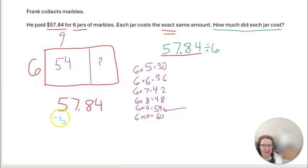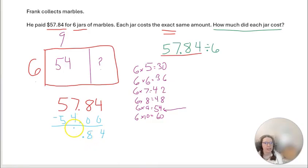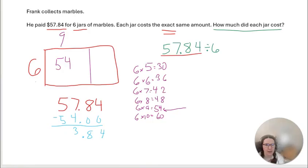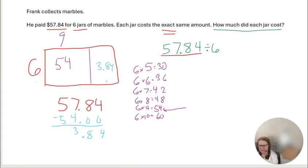Now I know the whole thing is $57.84 and this part is 54, so let's subtract to find the remaining piece. $57.84 minus 54: 4 minus 0 is 4, 8 minus 0 is 8, 7 minus 4 is 3, 5 minus 5 is 0. So this remaining part is $3.84. What times six equals $3.84?